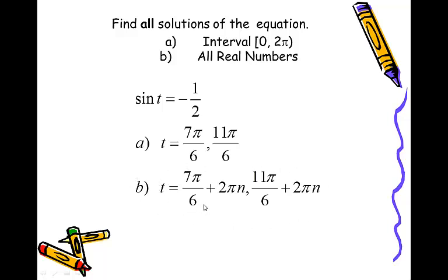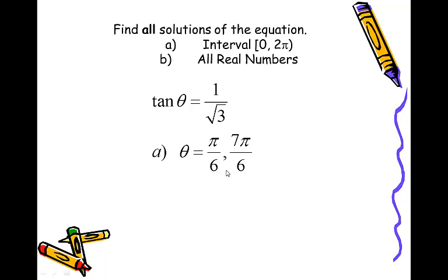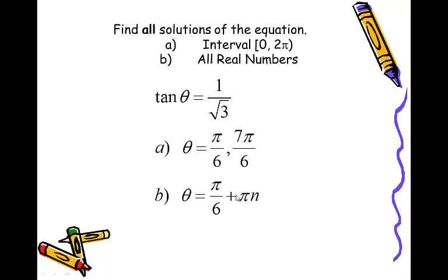This represents all possible angles whose sine is negative 1/2. Now let's try a tangent problem: tangent theta equals 1 over square root of 3. You should be thinking quadrants 1 and 3, where tangent is positive, and thinking pi over 6 — so pi over 6 in quadrant 1 and 7 pi over 6 in quadrant 3. The tangent curve has a period of pi; it repeats every pi radians. These two angles are exactly pi radians apart, so you only need one part to your answer: pi over 6 plus pi n. That's all we need.